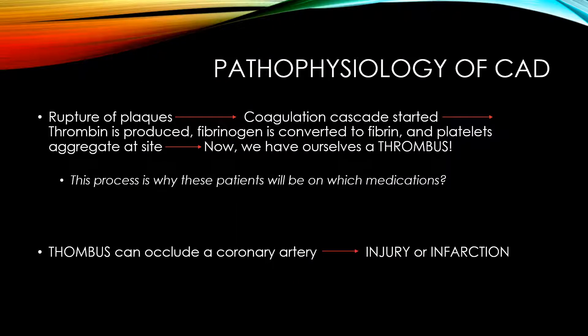Those fatty streaks eventually become fibrotic plaques as material keeps building up. When that plaque ruptures, it sets off the coagulation cascade — thrombin is produced, fibrinogen is converted to fibrin, and platelets are attracted to the site, forming a thrombus in a coronary artery. This is why CAD patients are on antiplatelets — aspirin and Plavix — to prevent that platelet aggregation.